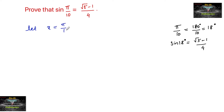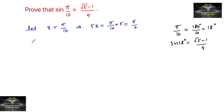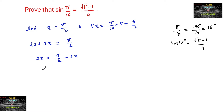Let x = π/10. This implies 5x = π/10 × 5 = π/2. We can also write 5x as 2x + 3x = π/2, which gives us 2x = π/2 - 3x. Now let us take sine of both sides.